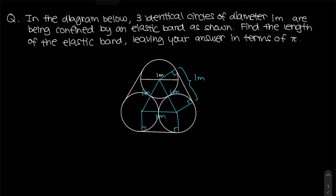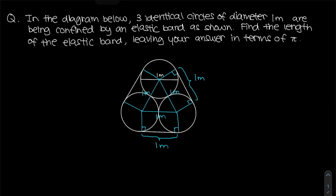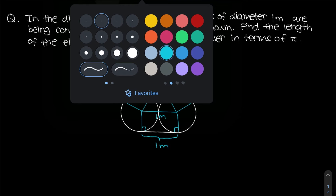So for each of the three sides, we have a right angle and a length of one meter. We now have one meter, one meter, and one meter — three straight segments found. All that remains is to find the curved part of the elastic band.